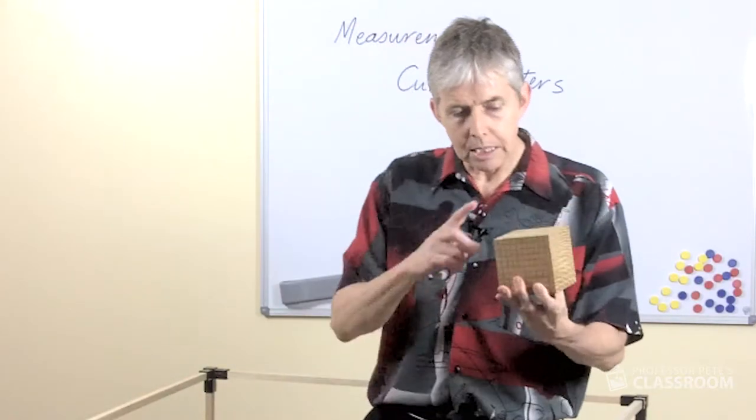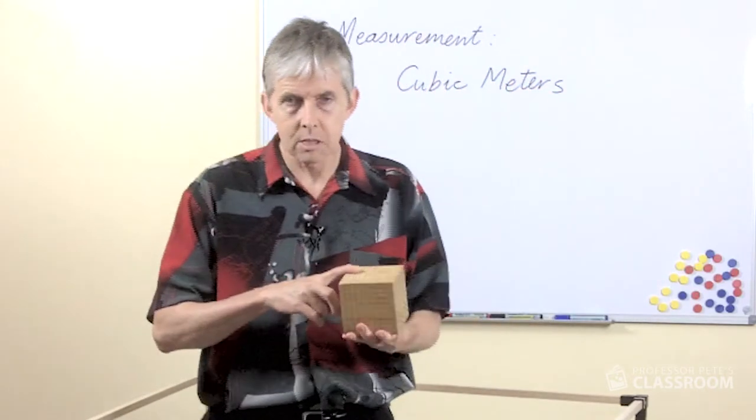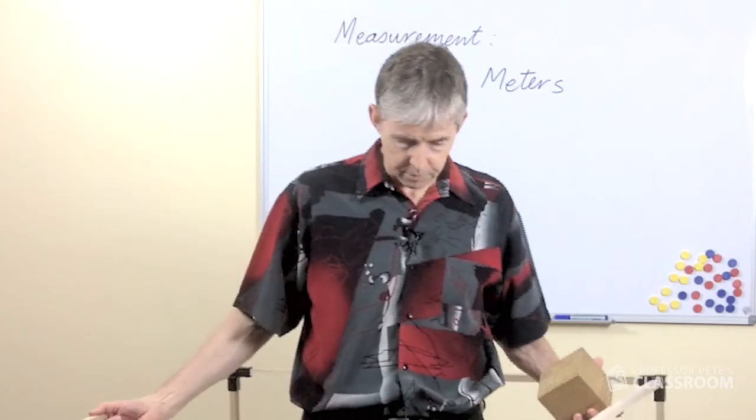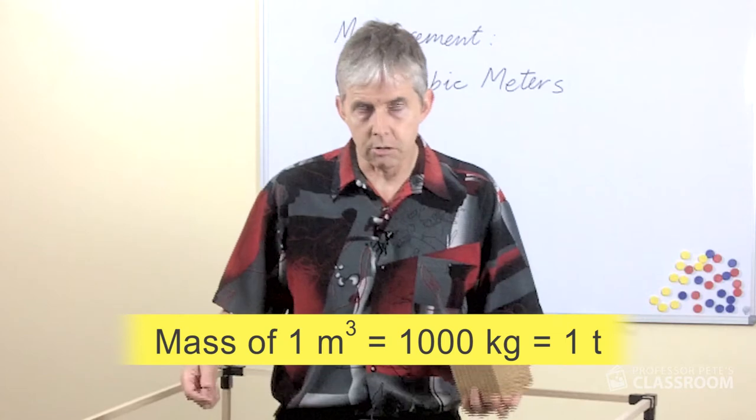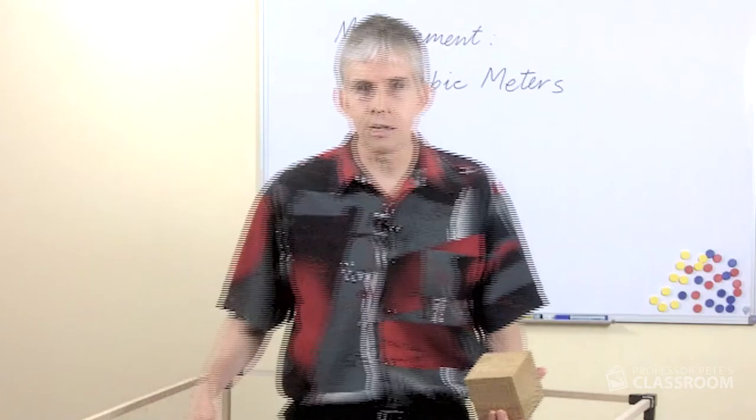Well a thousand liters fit in a cubic meter, a thousand kilograms is a ton. So a cubic meter of water weighs a ton, the same amount as a small car. So there we go, a cubic meter kit.